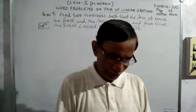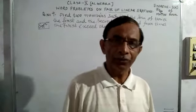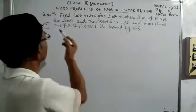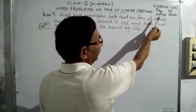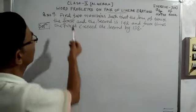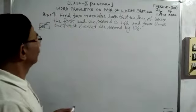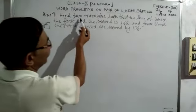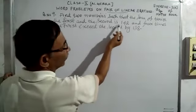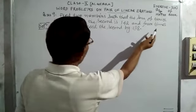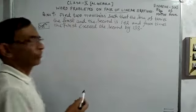Hello my dear students. We have done so many sums from this exercise, so today we are learning question number 9 from Exercise 3E from the book ABC of Maths for Class 10. The chapter is Word Problems on Pair of Linear Equations. Read the question: Find two numbers such that the sum of thrice the first and the second is 142, and four times the first exceeds the second by 138.